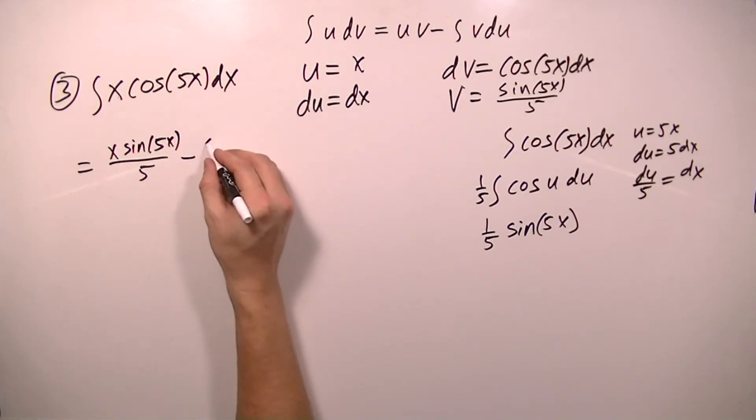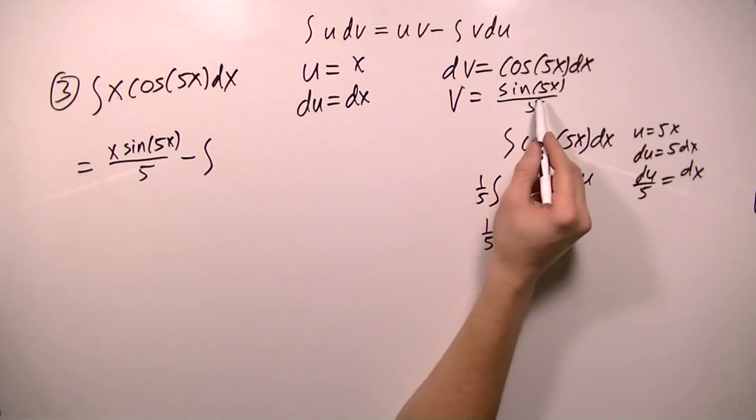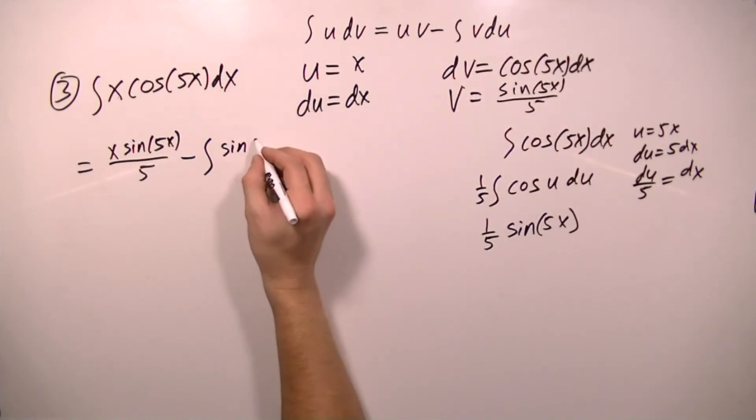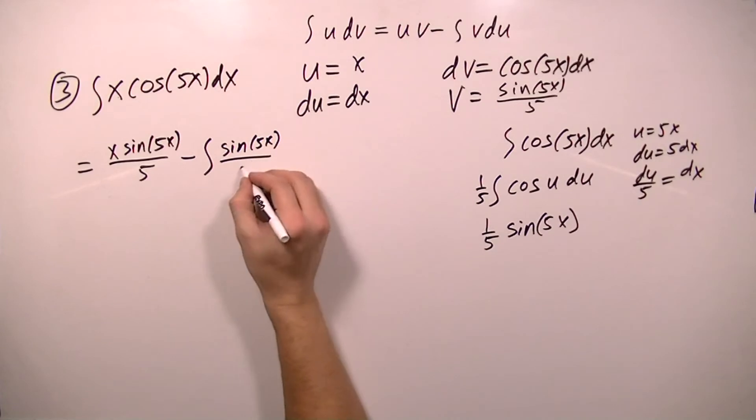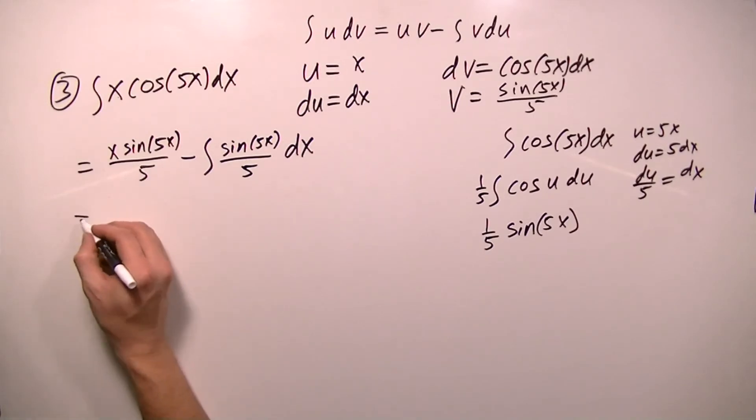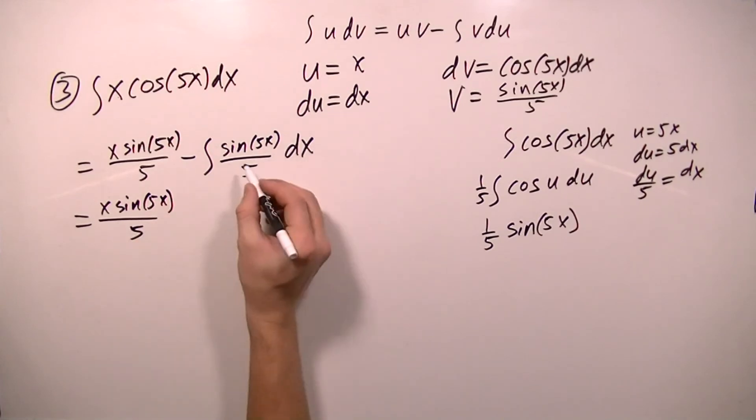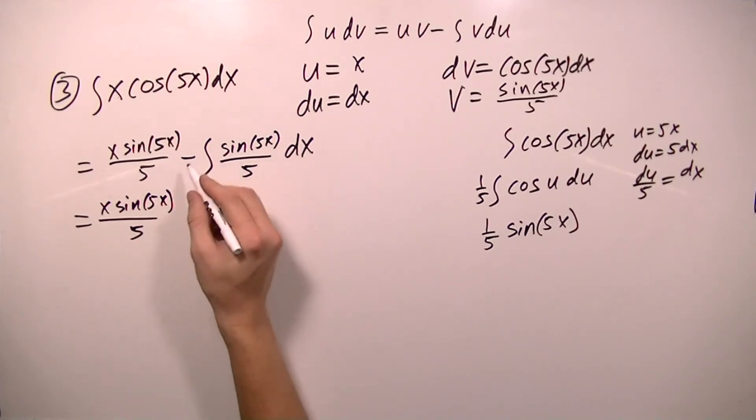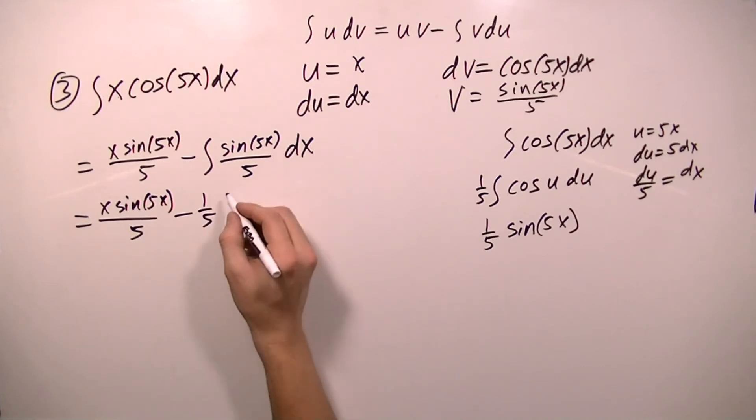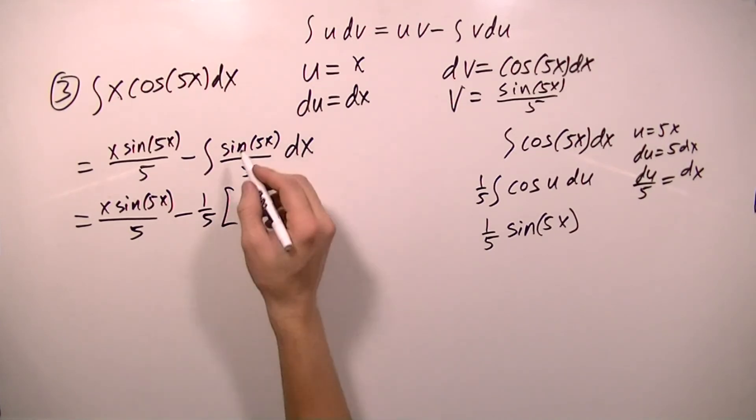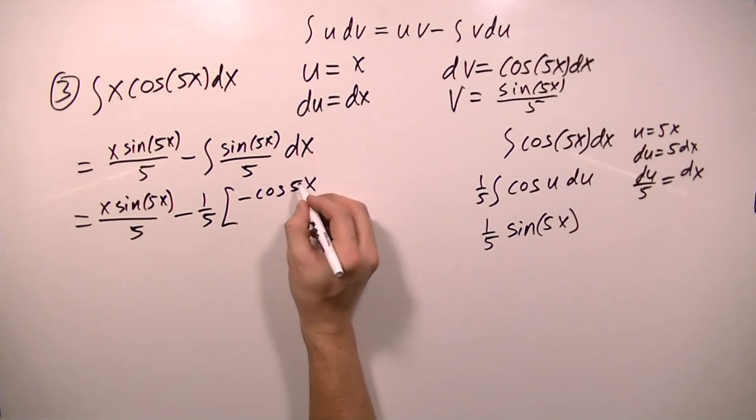And then I subtract the integral of v times du. So v is sine 5x over 5, and du is just dx. So now I can take the integral. This is easily integrated. So I'm going to subtract, I'm going to factor out this one fifth. And the integral of sine 5x using a substitution is going to be negative cosine 5x over 5.